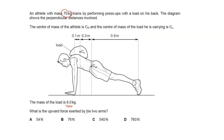The question asks for the upward force exerted by his two arms. I will now represent the forces. There is first an upward force from the arms — I'll use another color so that it will be visible. So this is the upward force of the arms.